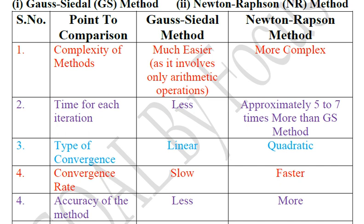The second point is time for each iteration. In case of GS method, iteration time is less. But in case of Newton-Raphson method, iteration time is approximately 5 to 7 times more than GS method.